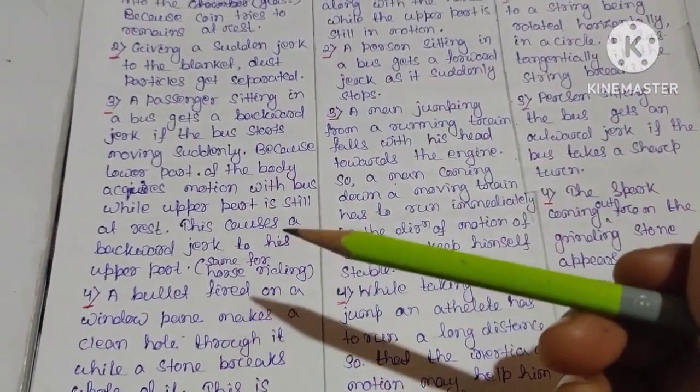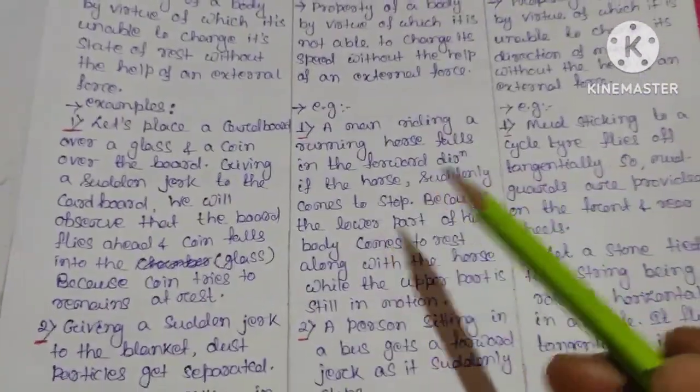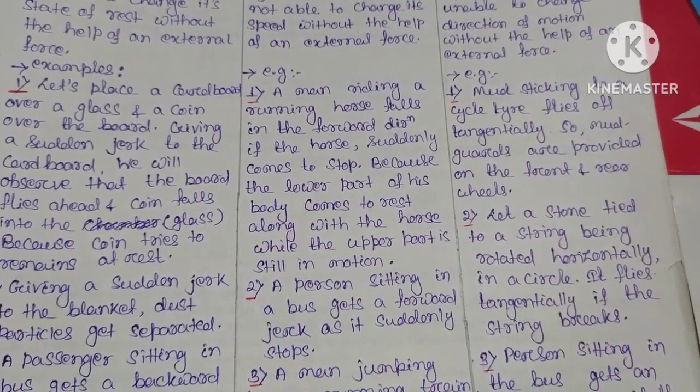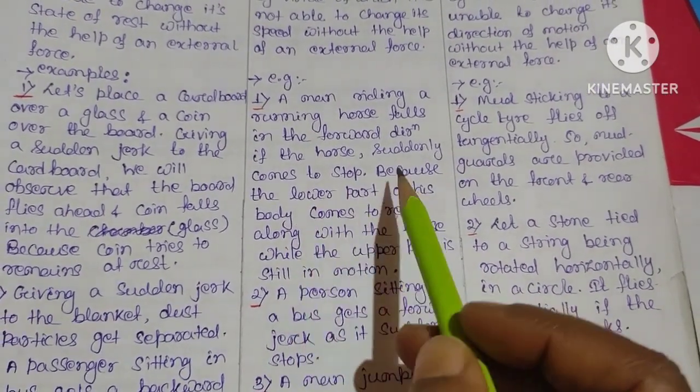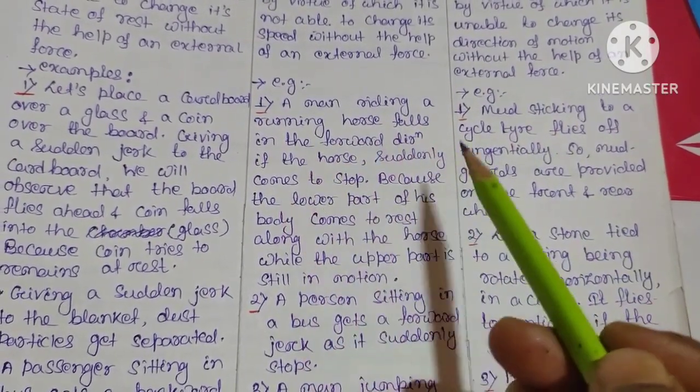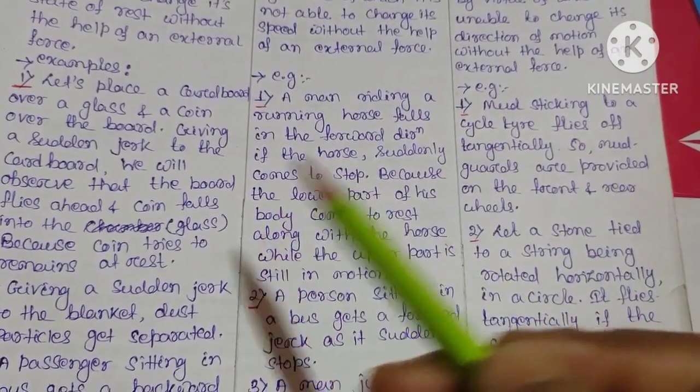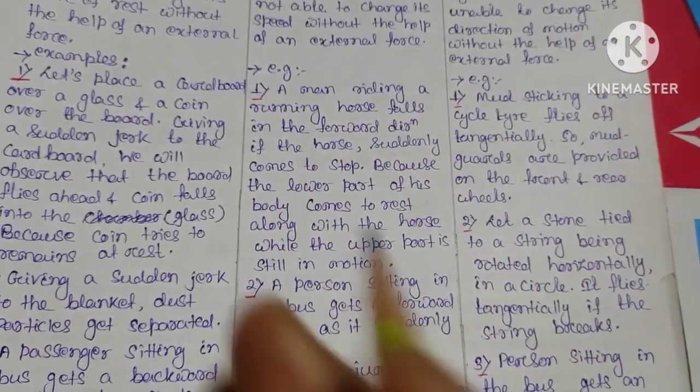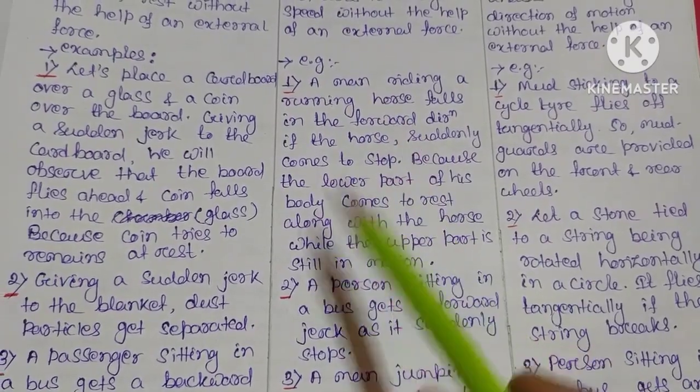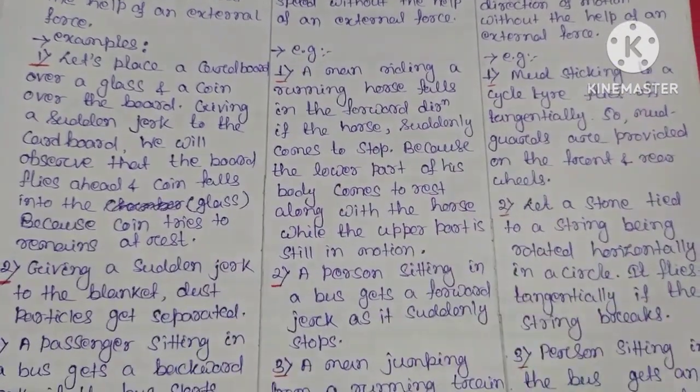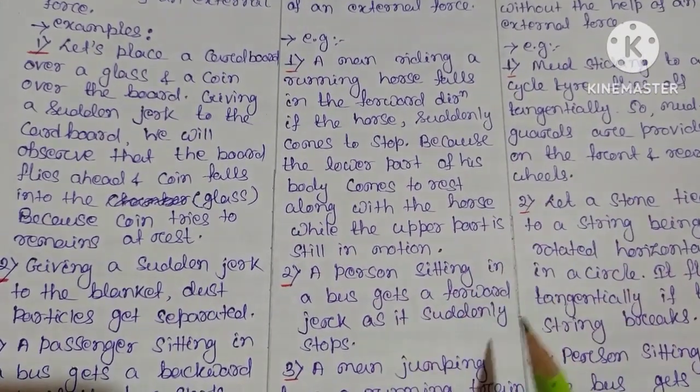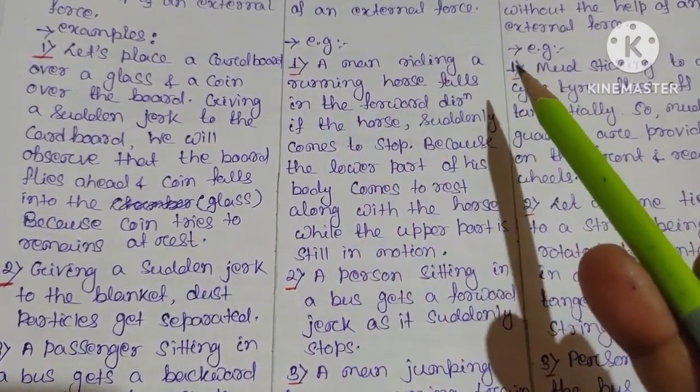This is the property of inertia. This is the inertia of rest. If the horse suddenly comes to a stop, the rider falls in the forward direction. This is the danger. The force will injure your hand if the horse stops suddenly.